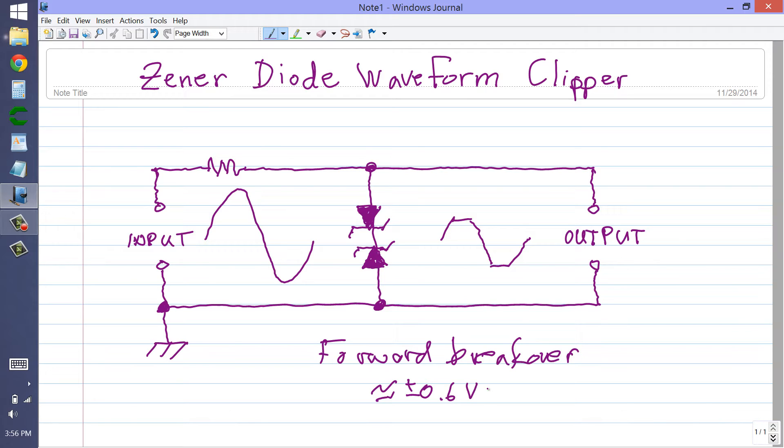Well, you can't really do that with a conventional reverse parallel diode arrangement, but you can do it by connecting a pair of Zener diodes in reverse series, like this. Now, if you do that, let's just describe what occurs.